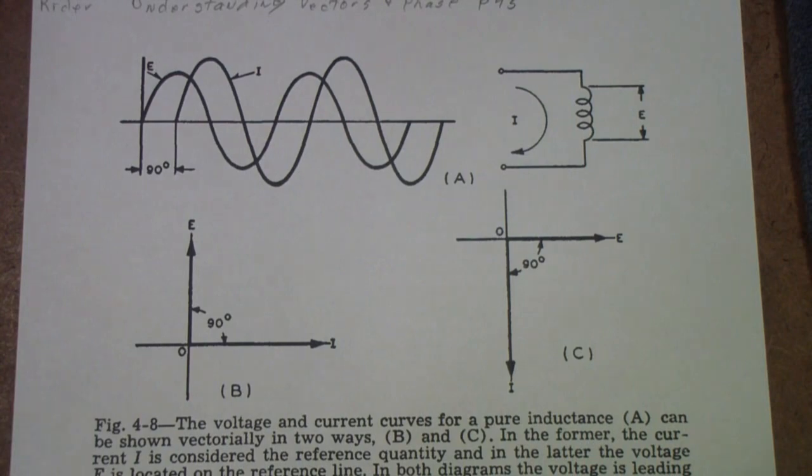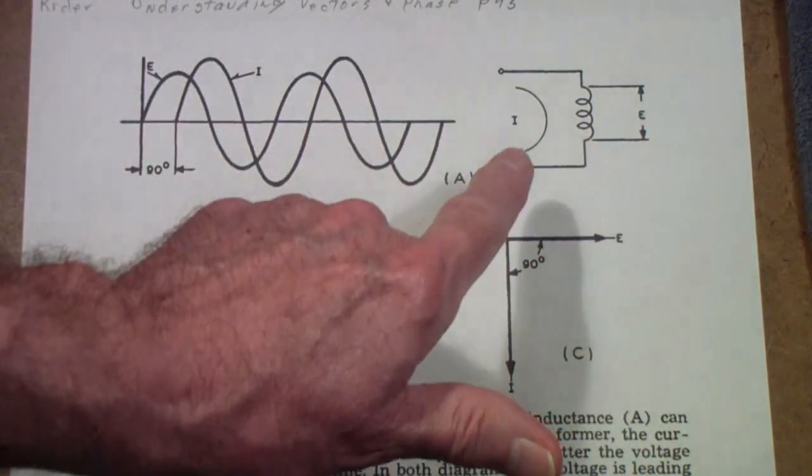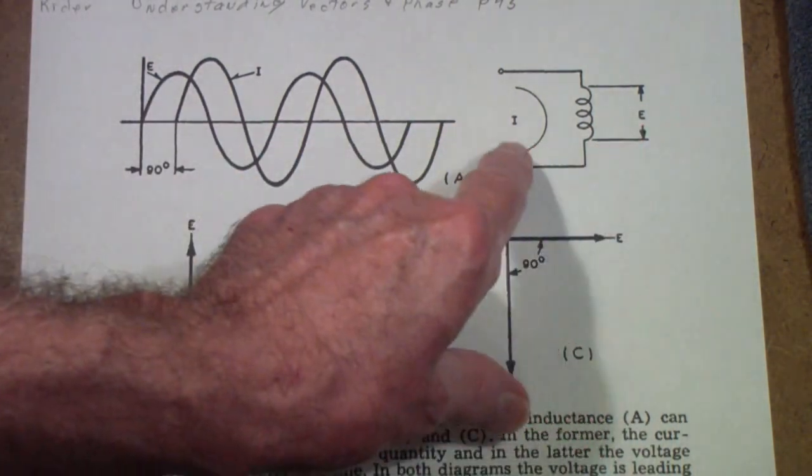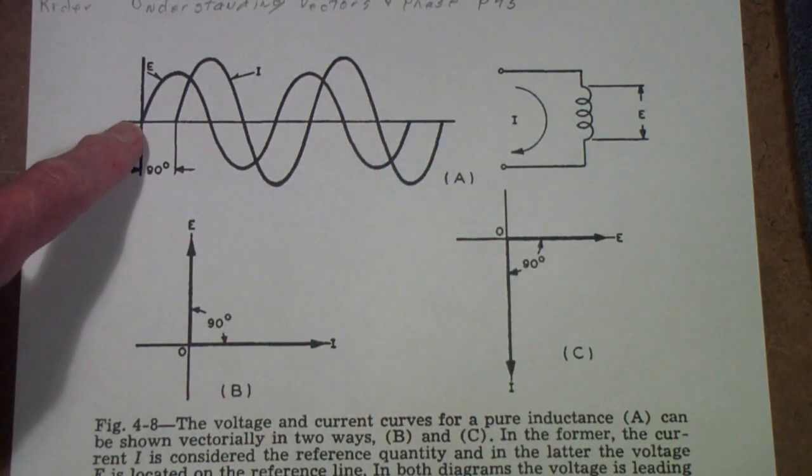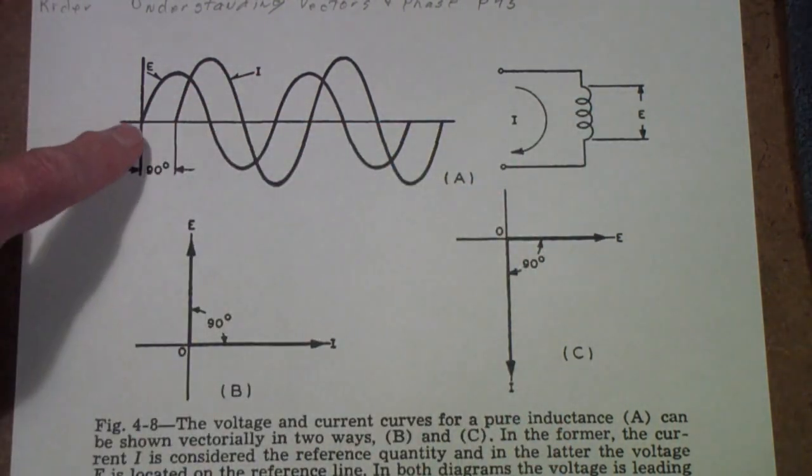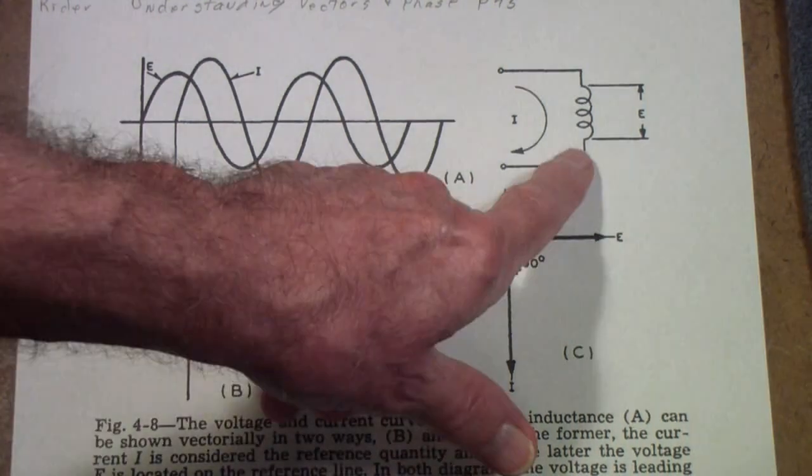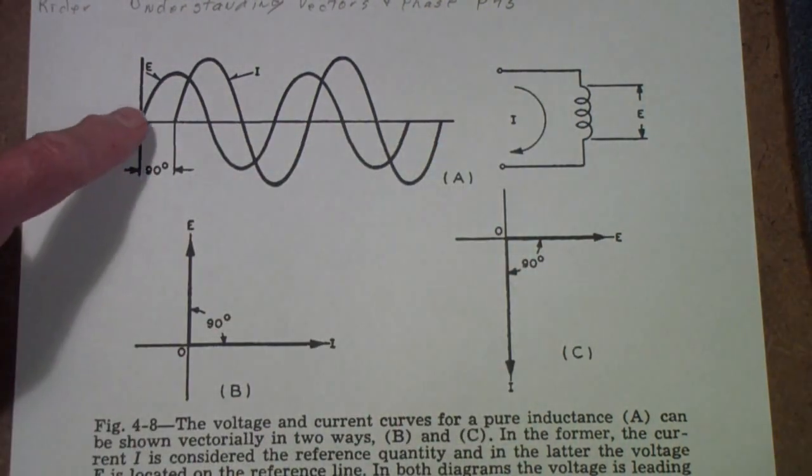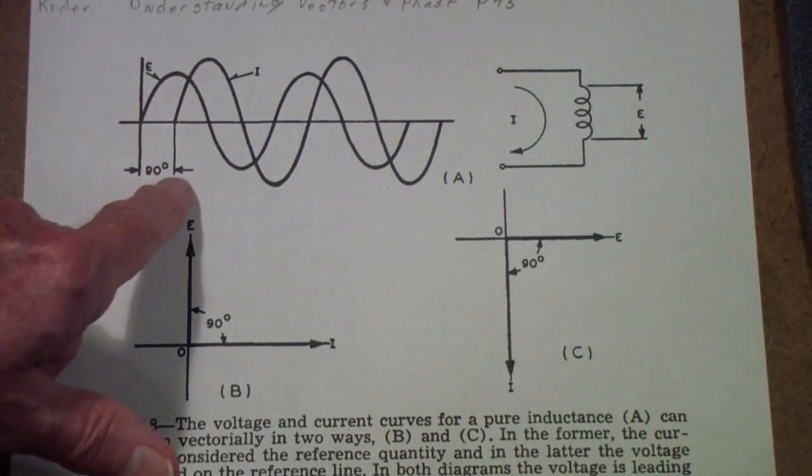And the reason that it's written in that form, rather than I-L-E, is the voltage leads the current. If you look at the waveforms of the voltage and the current for an inductor, what you will find is that they are separated by one-quarter wavelength. That is,